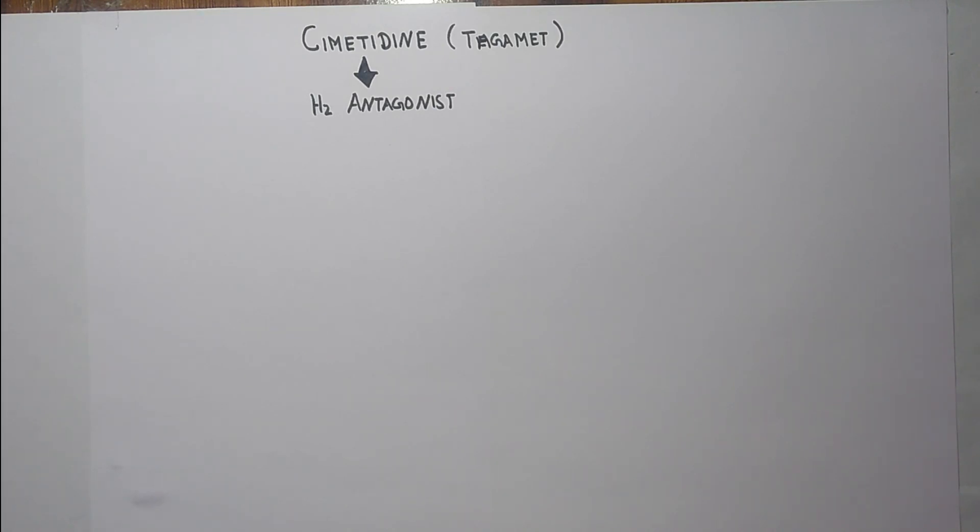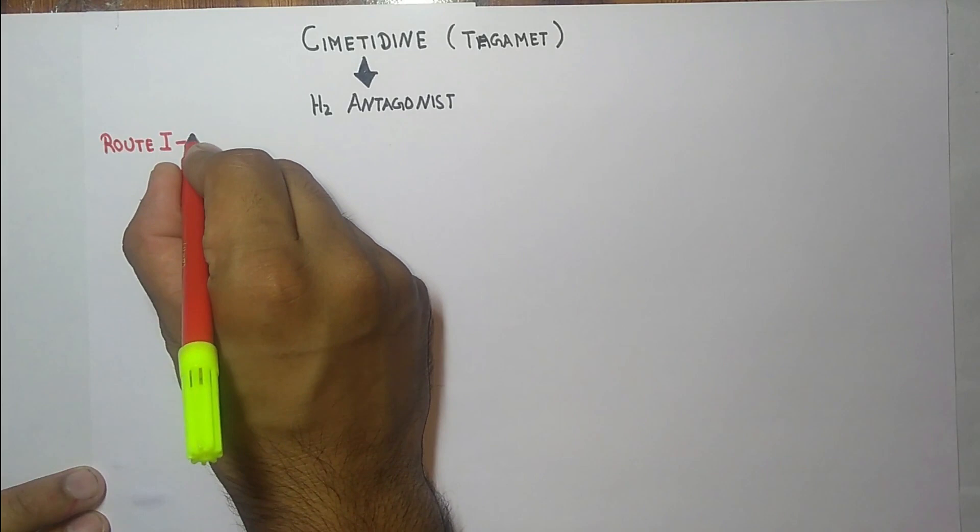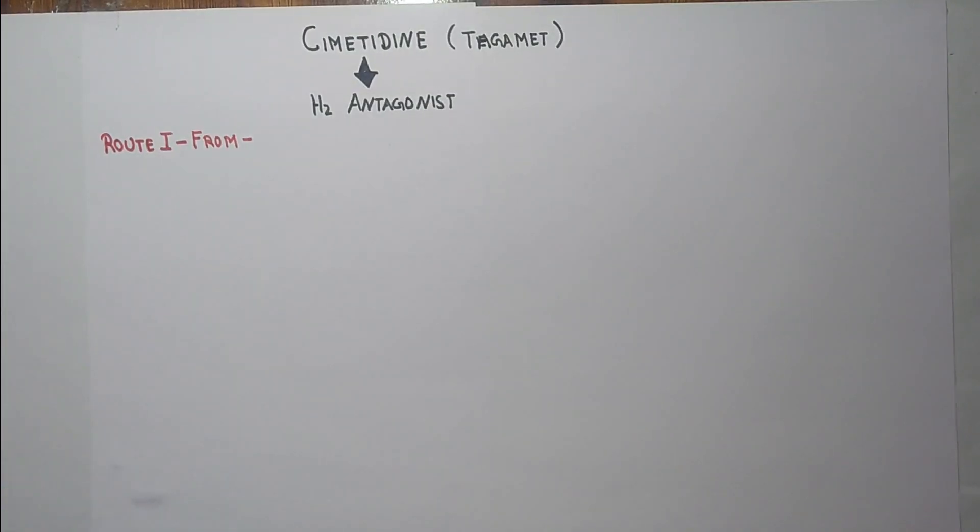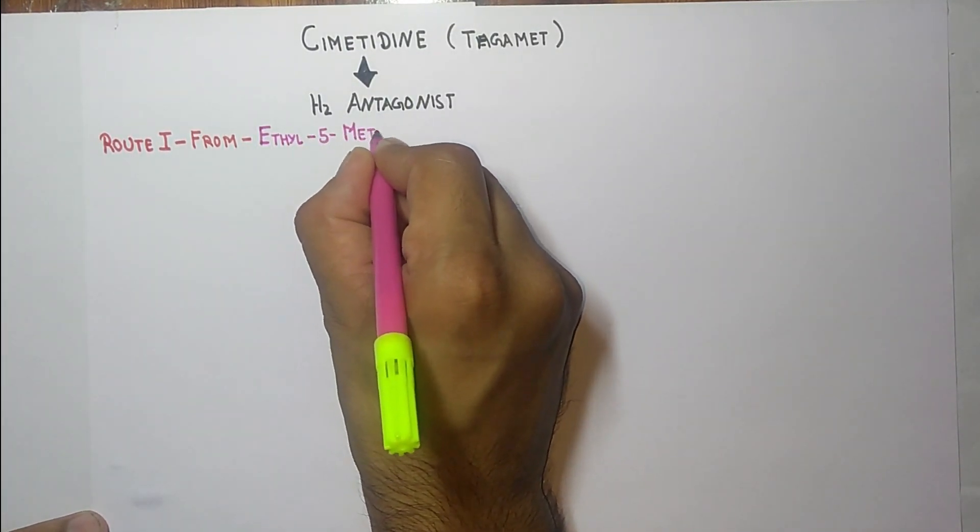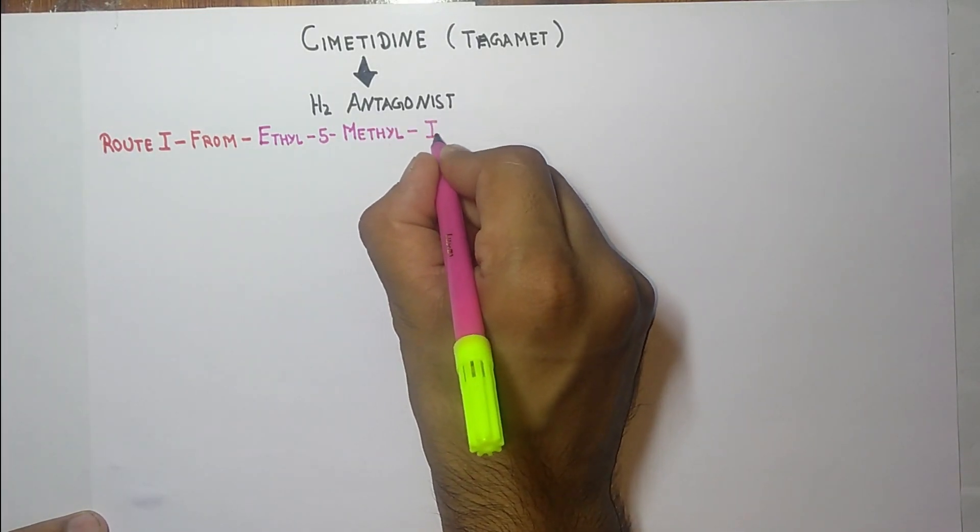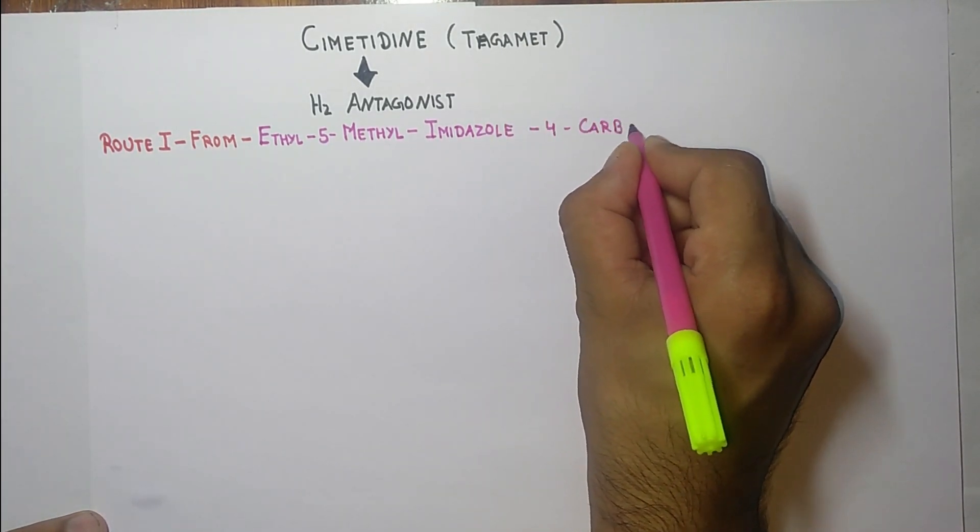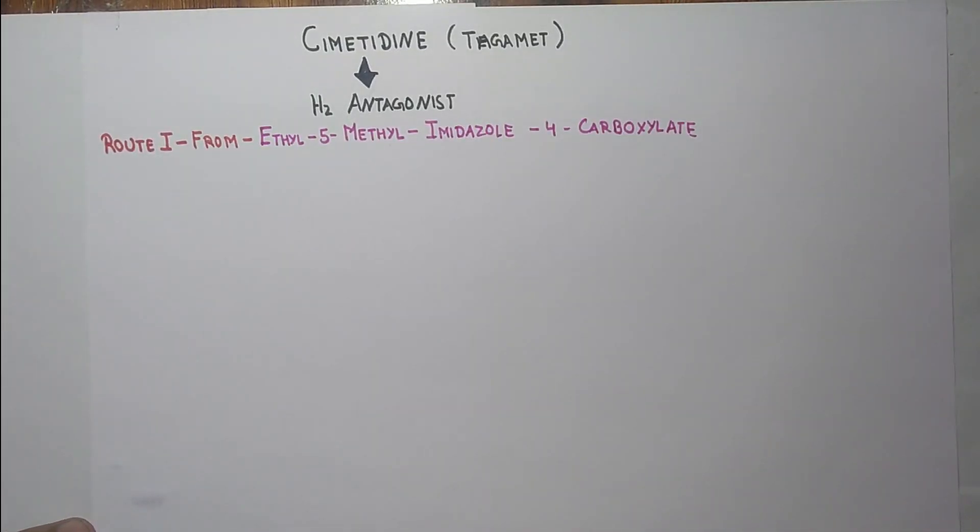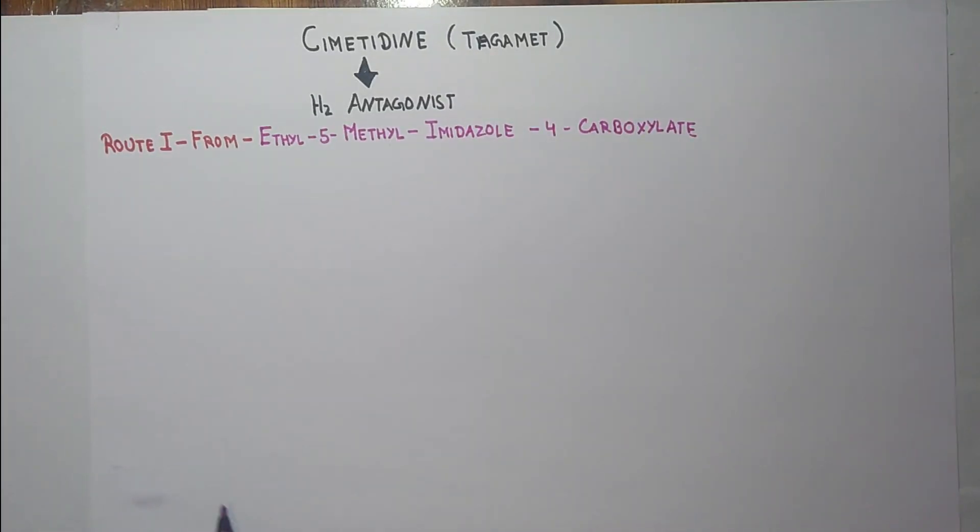So there are two routes for the synthesis. The first one is from ethyl-5-methyl-imidazole-4-carboxylate. As its name indicates, we are going to make the starting material that is ethyl-5-methyl-imidazole-4-carboxylate. So the structure is...